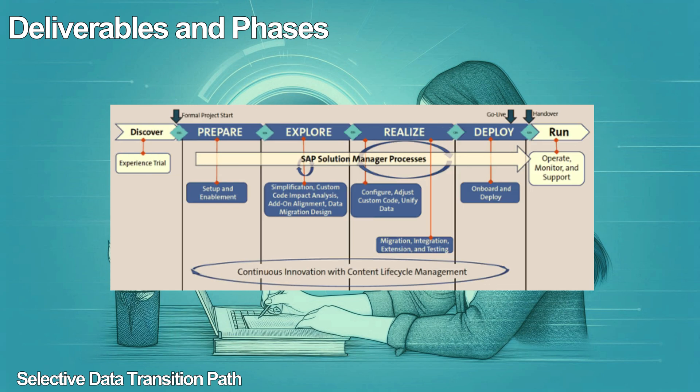Let's walk through the major project phases and key deliverables. In the discover phase, the team accesses the trial system to understand the innovations and functionalities of SAP S4 HANA. In the prepare phase, apart from project kickoff and project management activities, the team completes setup and enablement activities, performs custom code analysis to identify changes, retires unused code, modifies incompatible code, and provides high-level estimates. In the explore phase, the team sets up the sandbox environment from the current production environment, carries out the fit-gap analysis, and prepares the product backlog based on delta design workshops.